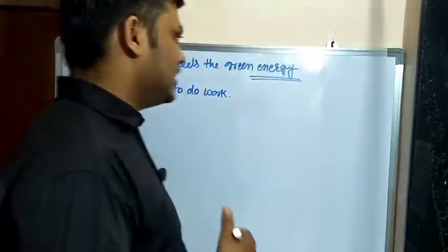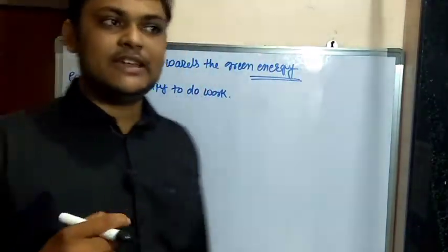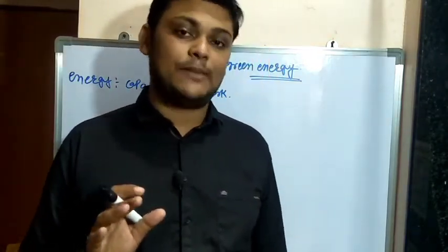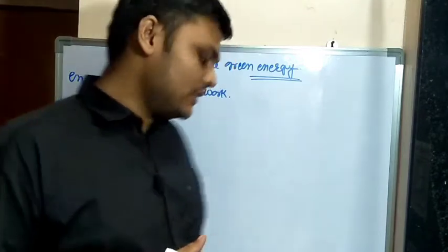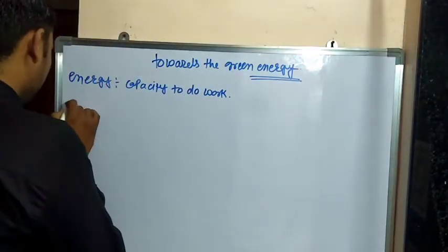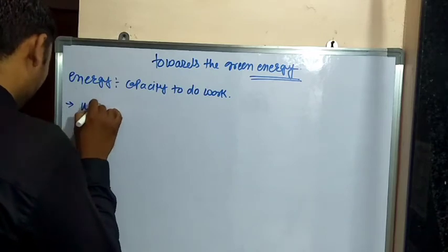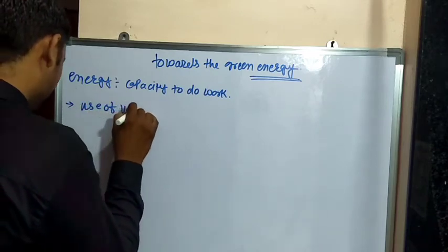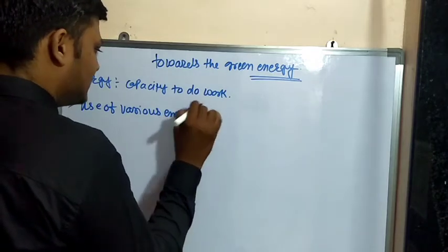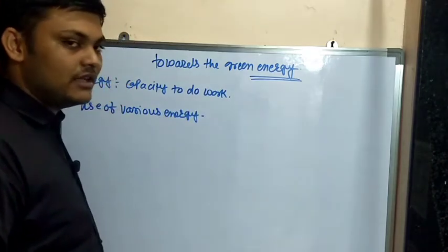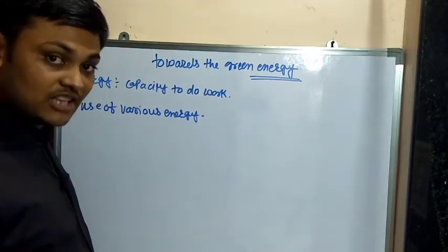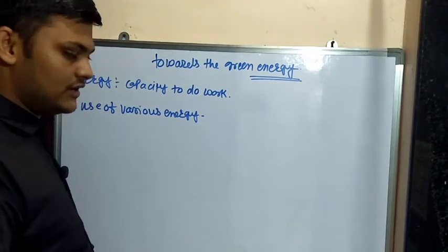Regarding human body and human health energy, we are not going to discuss that in this chapter. In this chapter, the first point we are going to discuss is the use of various energy. Various means: light, electrical, wind, heat, sound, mechanical, geothermal, thermal — all several kinds of energy.